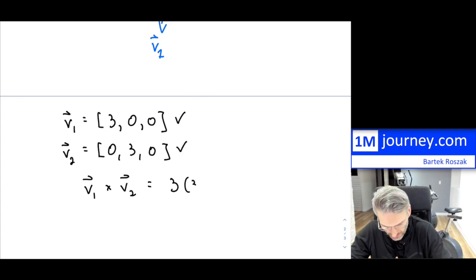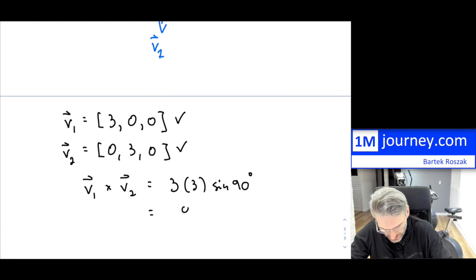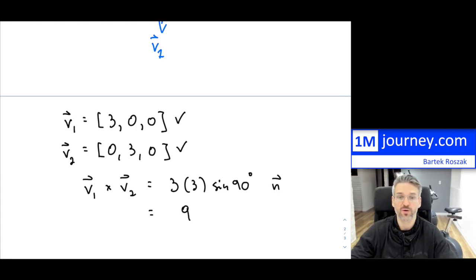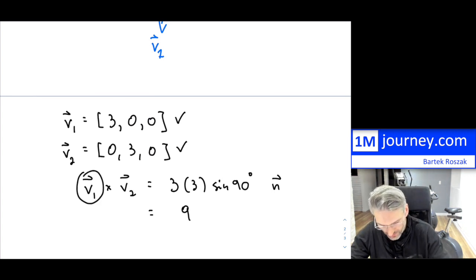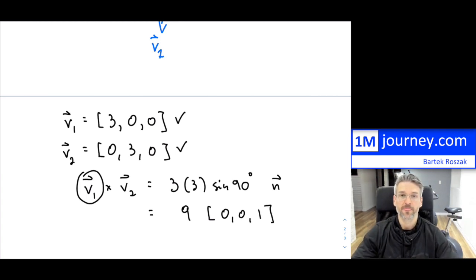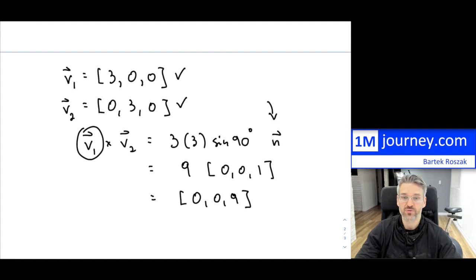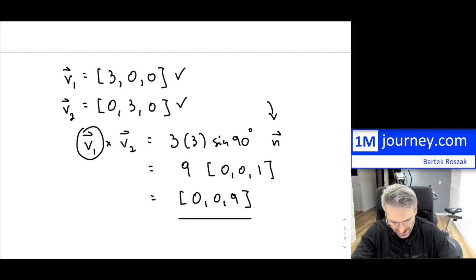The sine of the angle between them — which is 90 degrees — well, sin(90°) = 1. So you have 3 × 3 × 1 = 9, and then this needs to go in the direction of the normal. Since we're going from V1 to V2, this would be 9 and your vector is pointing upwards — in the direction (0, 0, 1). Taking that unit normal vector and multiplying by 9 gives you (0, 0, 9). That is your actual cross product — it is a vector.